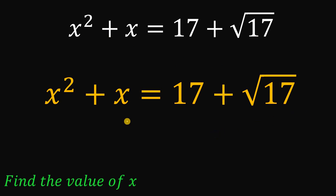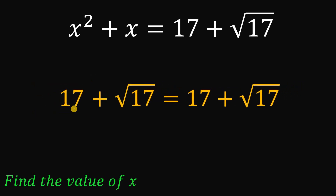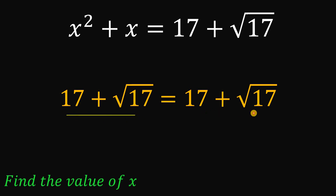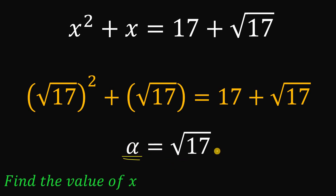By observation, we have an obvious solution: if we replace x with square root of 17, we get square root of 17 raised to the power of 2 plus square root of 17. Simplifying, square root of 17 squared is just 17, so we have 17 plus square root of 17. They are balanced, meaning square root of 17 satisfies this equation. We'll call this alpha, so alpha equals square root of 17. This is the obvious first value of x.